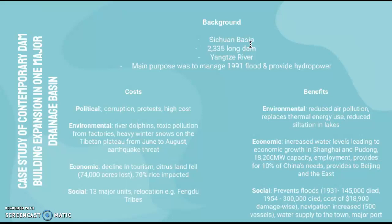The benefits of the dam include environmental improvements such as reduced air pollution, replacement of thermal energy use, and reduced siltation in lakes. Economically, increased water levels have led to economic growth in Shanghai and Pudong. The dam has a capacity of 18,200 megawatts, provides employment, and meets around 10 percent of China's electrical needs, supplying energy to Beijing and eastern areas.